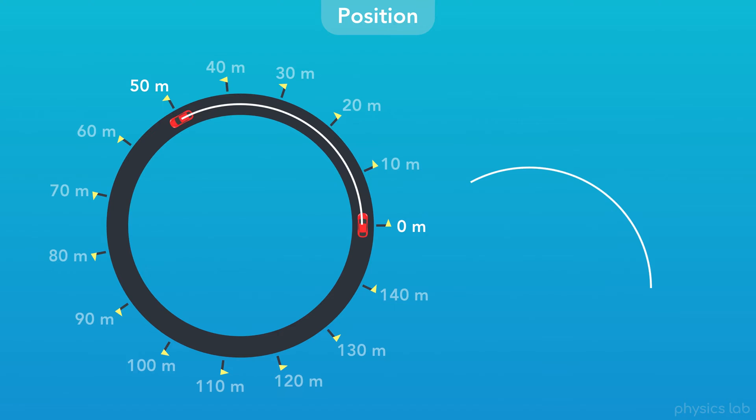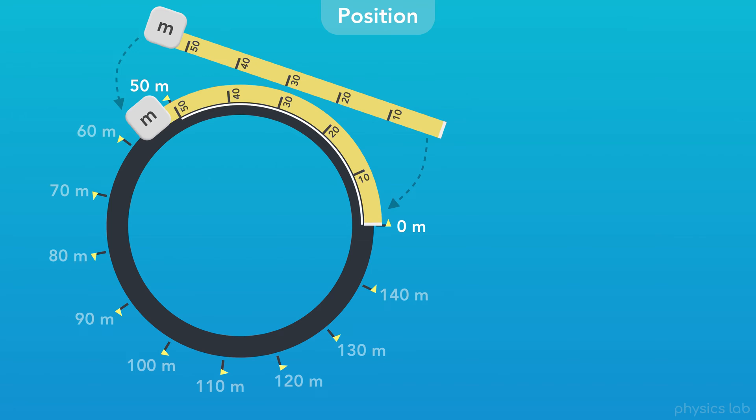If we took that arc and straightened it out, as if it were a string, its straight length would still be 50 meters. We could also imagine taking a big tape measure and wrapping it around the road. That would tell us where to place each of these flags.